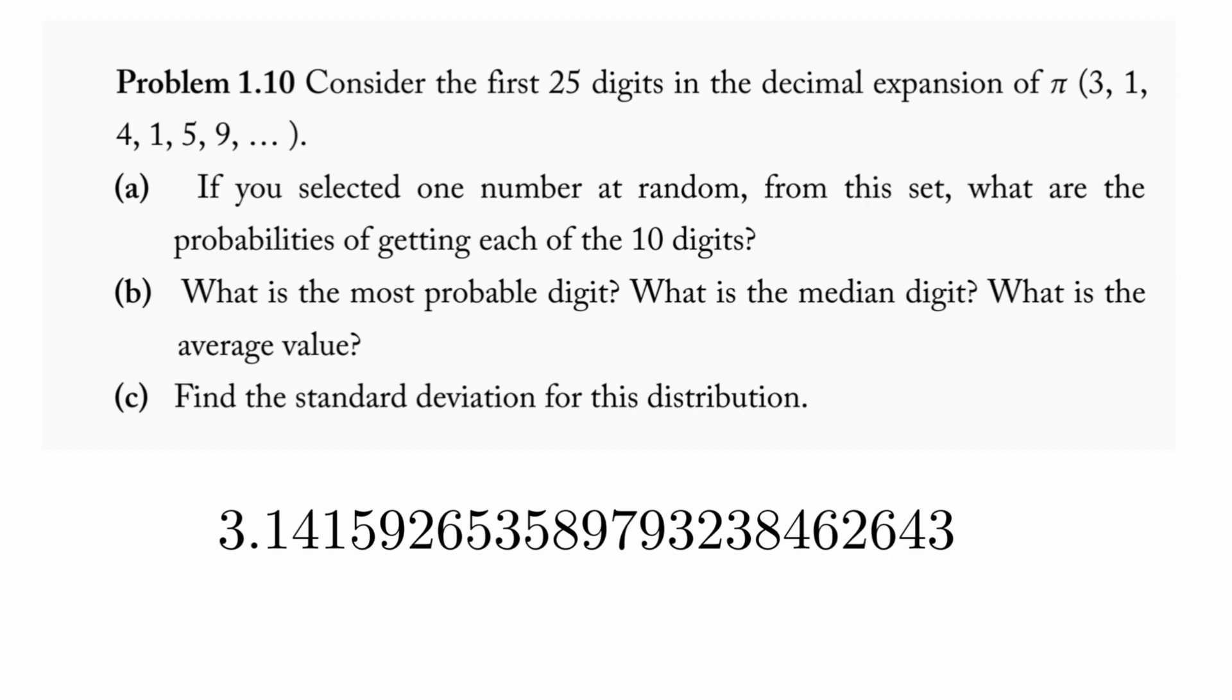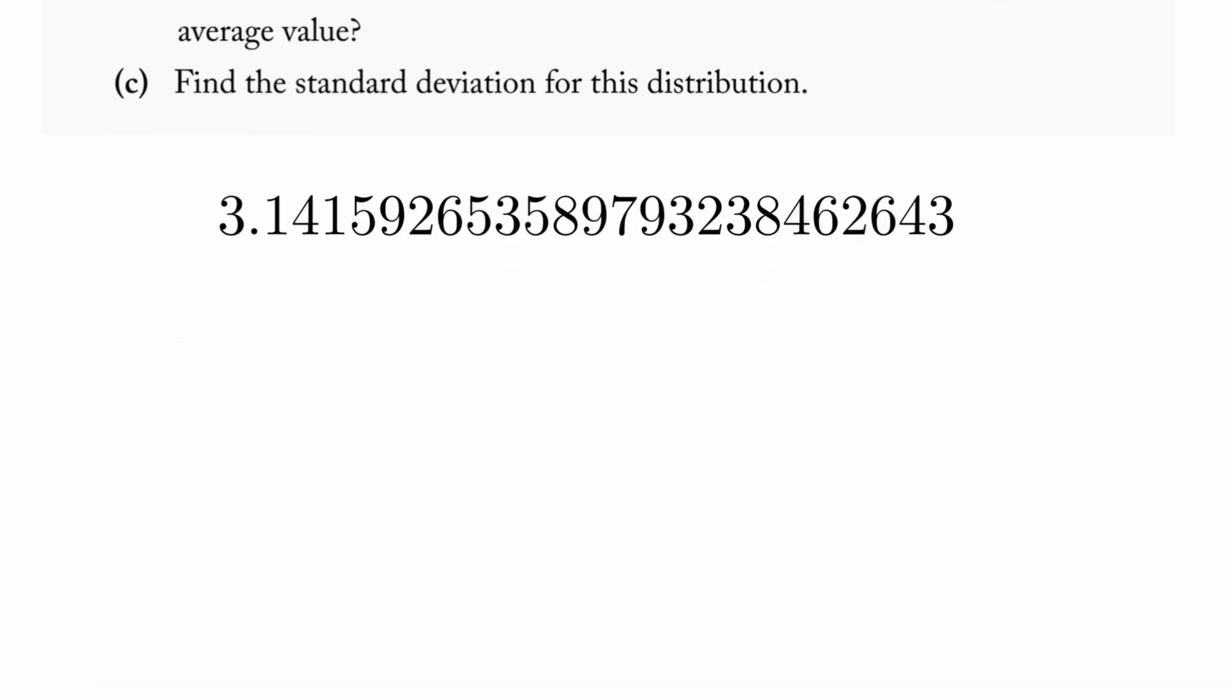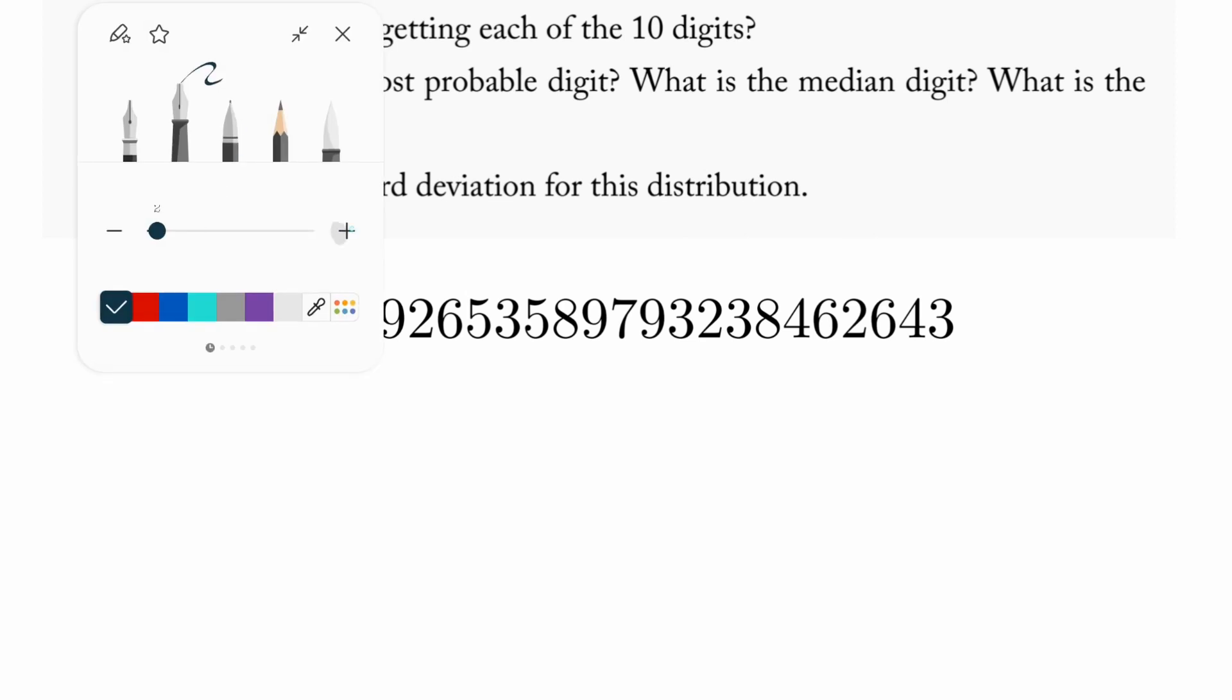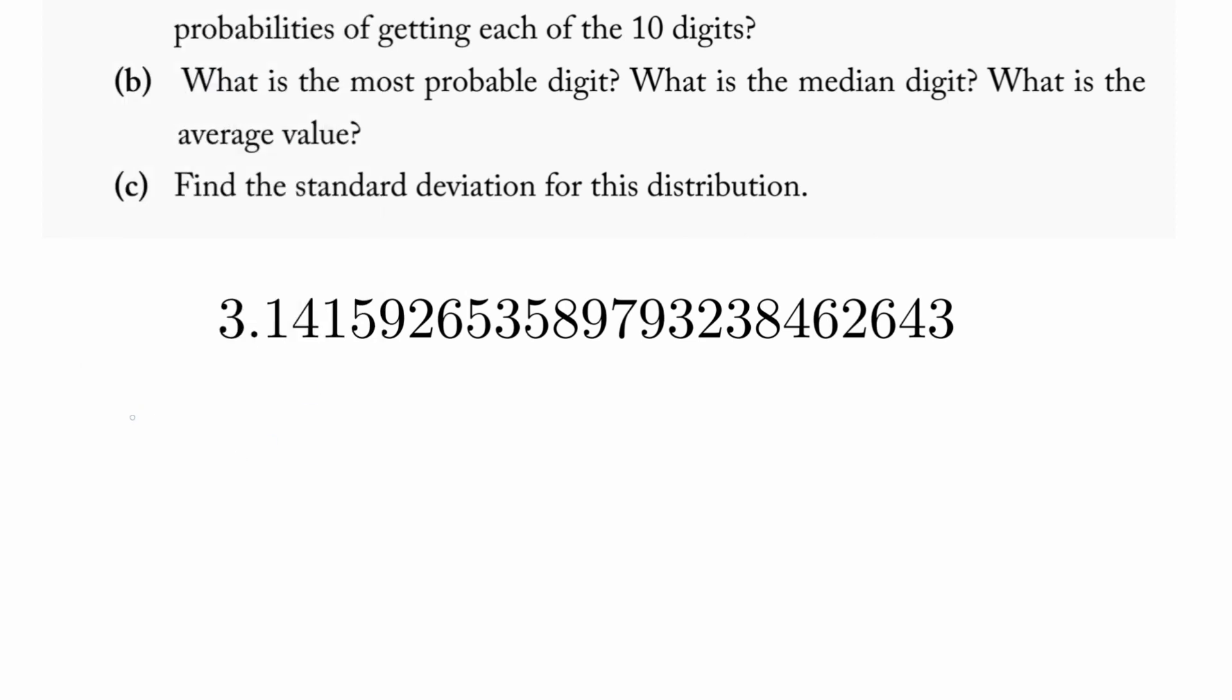What's the most probable digit, what's the median digit, what's the average value, and then part c, what's the standard deviation. So for part a, let's go ahead and make a table here.